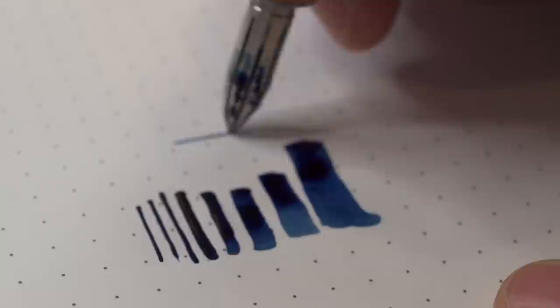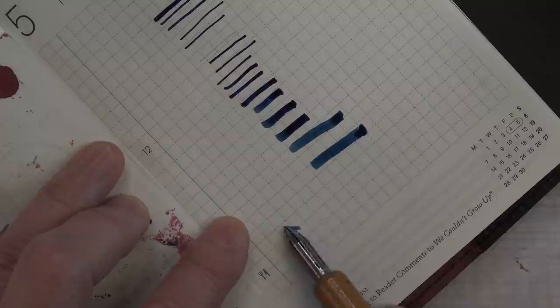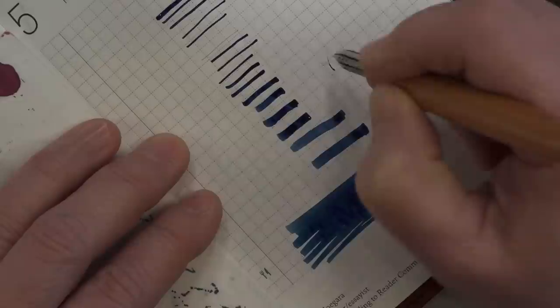I think this will be a very useful tool for people who like to do ink swatches and then also write in that same color. Kakimori ships internationally and you can also buy these at Yoseka Stationery.